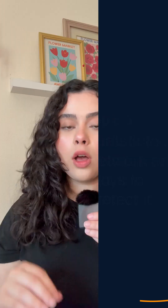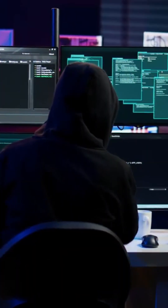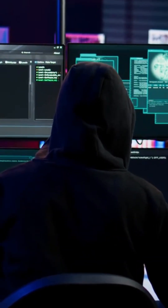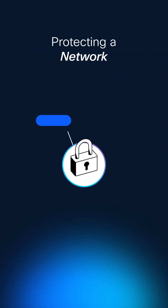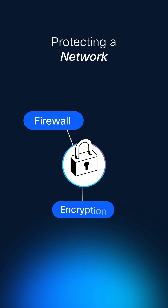Finally, there are all kinds of threats out there: malware, phishing emails, or even DDoS attacks, where people try to crash a network by flooding it to cause chaos. To fight back, we use tools like firewalls to block unwanted traffic, encryption to scramble data so only the right person can read it, and VPNs to create private tunnels through the internet.